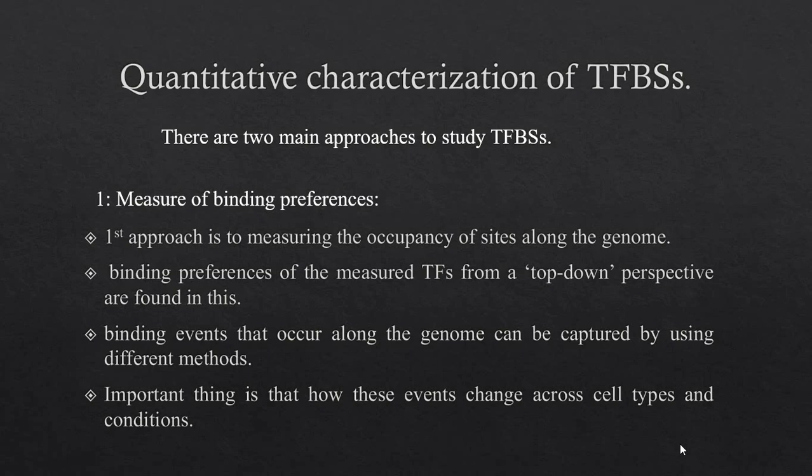Binding preferences of major transcription factors from a top-down perspective are identified, along with the different binding events recorded in the genome. An important question is how a change in these binding events affects the cell, and how such changes occur across different cell types of the same organism — since each cell has the same genome but different expression levels, making the cells different from each other.